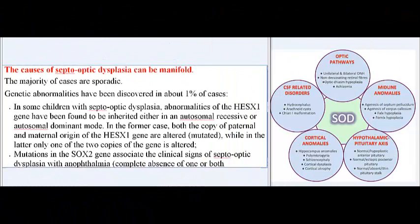The causes of septo-optic dysplasia can be manifold; the majority of cases are sporadic. Genetic abnormalities have been discovered in about 1% of cases. In some children with septo-optic dysplasia, abnormalities of the HESX1 gene have been found, inherited either in an autosomal recessive or autosomal dominant mode.